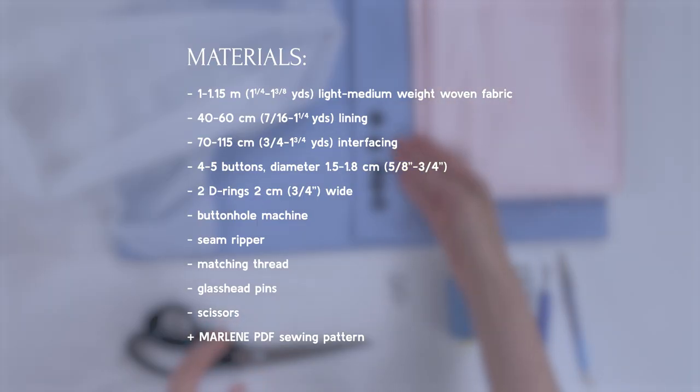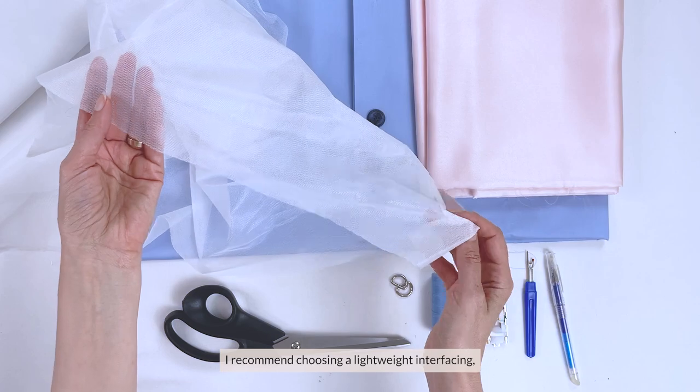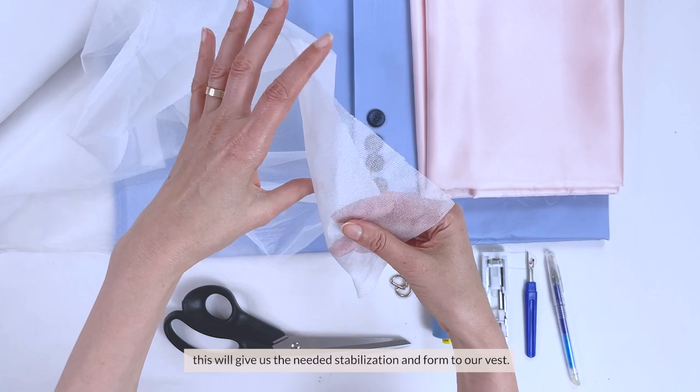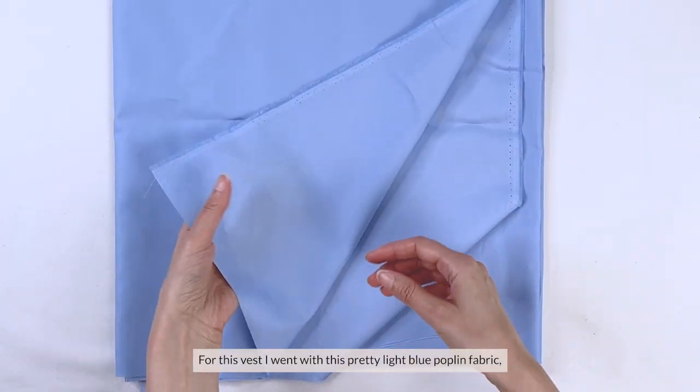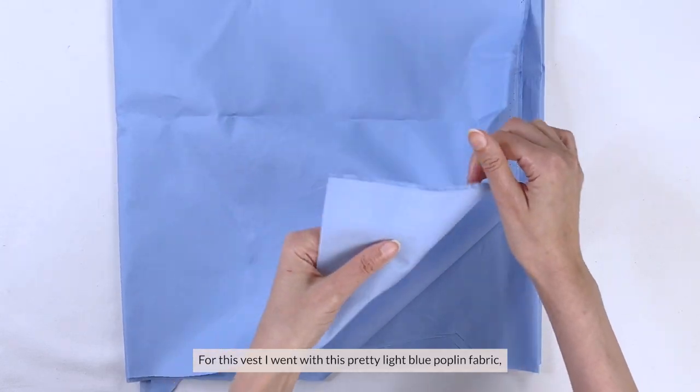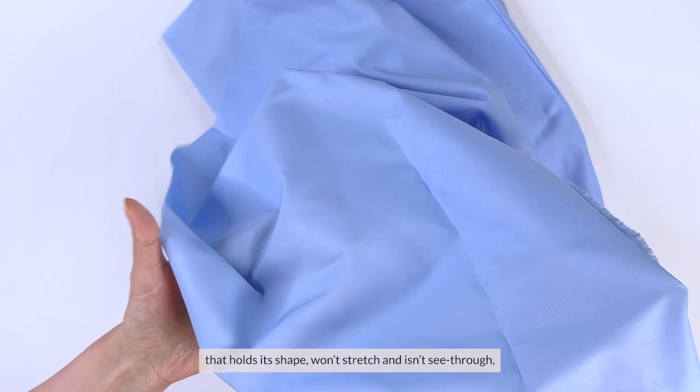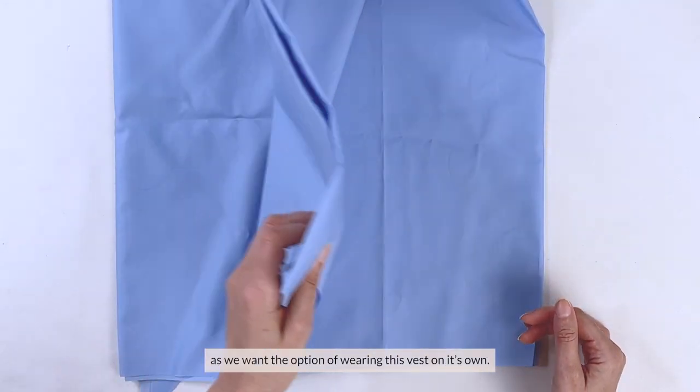Here are the materials that you'll need. A quick note about the interfacing, I recommend choosing a lightweight interfacing, here one side is smooth and the other side has tiny glue dots. This will give us the needed stabilization and form to our vest.